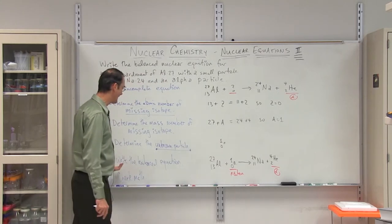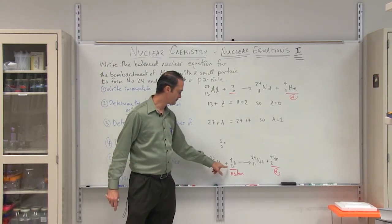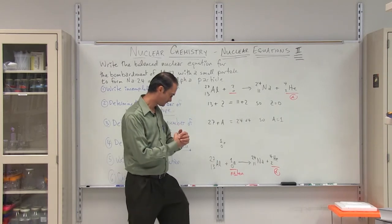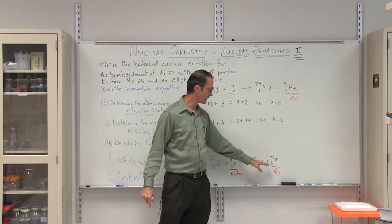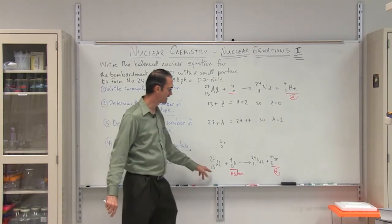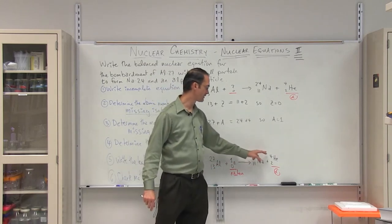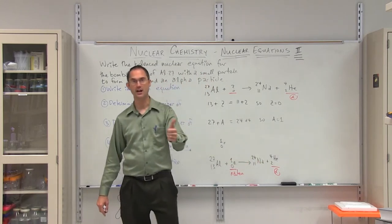So, let's put these together to write the balanced equation. We get aluminum plus a neutron for neutron bombardment. It's going to give us sodium plus the alpha particle. By checking our math, we simply see that 13 plus 0 equals 11 plus 2. Check. And 27 plus 1 is 24 plus 4, 28 at both sides. Check.